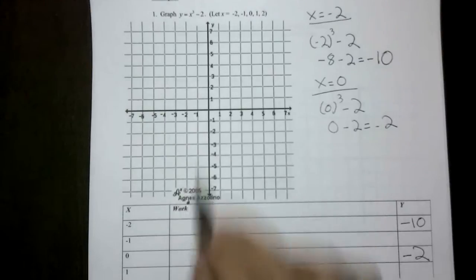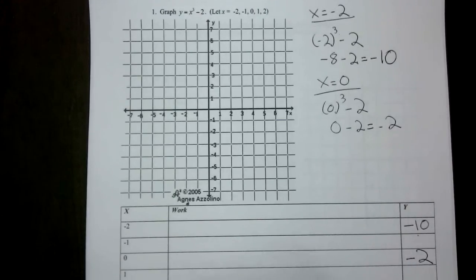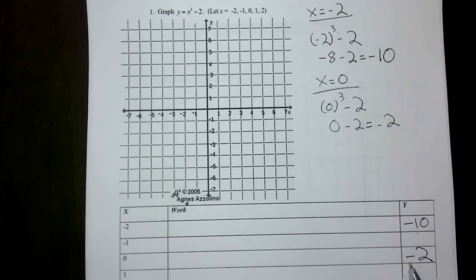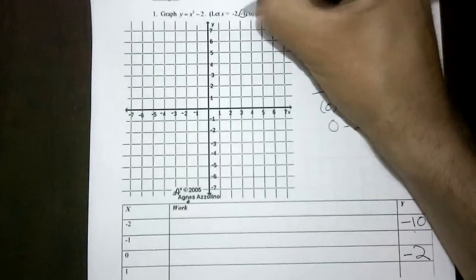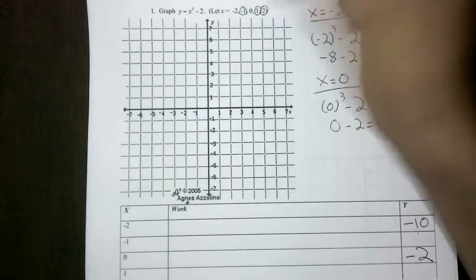When x was -2, the outcome was -10. When x was 0, the outcome was -2. I'll give you a moment to fill in when x is -1, 1, and positive 2.